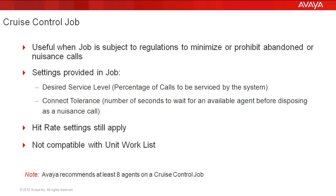Once you turn on cruise control on a job there are two settings: the desired service level and the connect tolerance. The desired service level is the percentage that you want the system to maintain while servicing the calls. For example, a setting of 99 would mean that you want the system to serve 99% of the calls made out of that job — and by service we mean getting the customer to talk with a live agent.